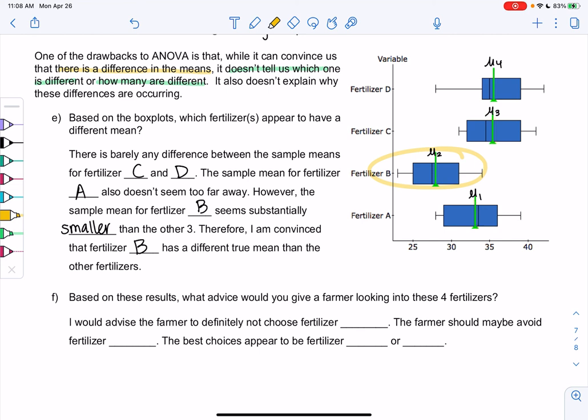So based on these results, what advice would you give a farmer looking into these four fertilizers? So if a farmer wants a fertilizer, a farmer wants more tomatoes. So I would advise the farmer to definitely not choose B. It's clear that B is not good. I would say maybe avoid A. I'm not convinced about A yet, so maybe avoid A. That's why it's just a maybe. It's not a big enough difference in my opinion. But because C and D are clearly the best, I would say the best choices are C or D. And that's ANOVA.